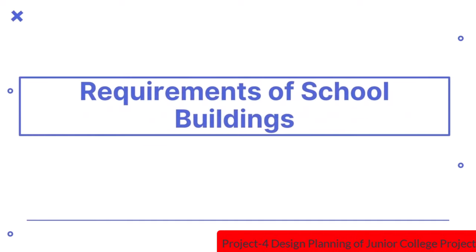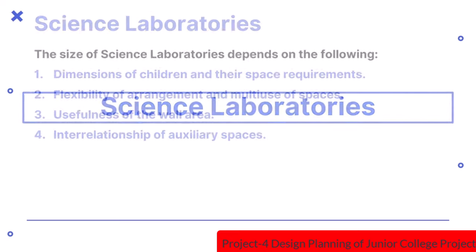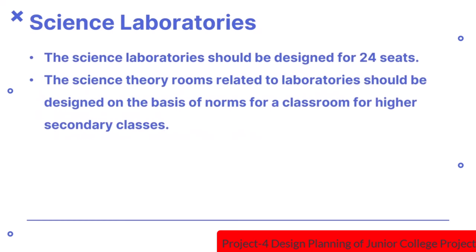Hello everyone. In this video, we will continue with the requirements of school buildings, discussing requirements of teaching spaces other than classrooms. The first is science laboratories. The size of science laboratories depends on: dimensions of children and their space requirements; flexibility of arrangement and multi-use of spaces; usefulness of wall area; and interrelationship of auxiliary spaces. Science laboratories should be designed for 24 seats. Science theory rooms related to laboratories should be designed on the basis of norms for a classroom for higher secondary classes.